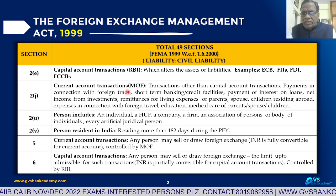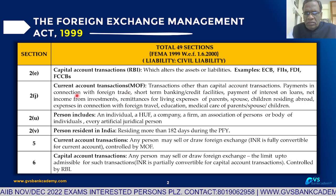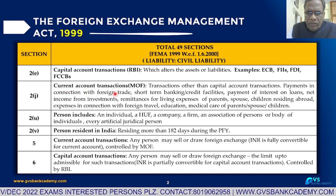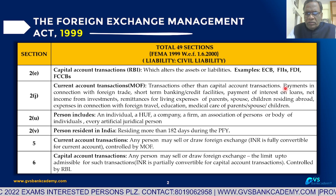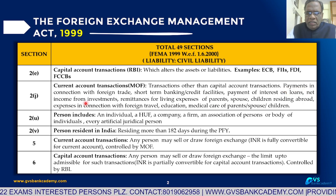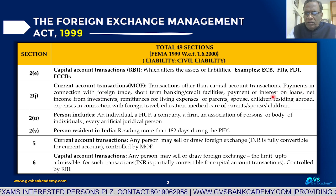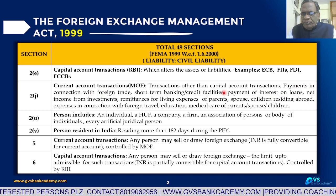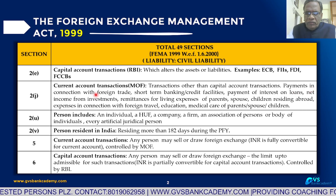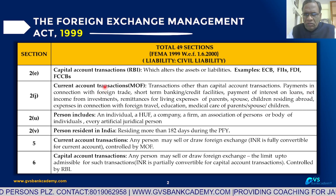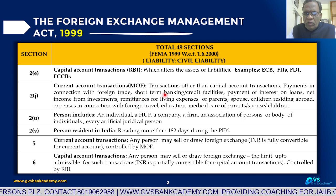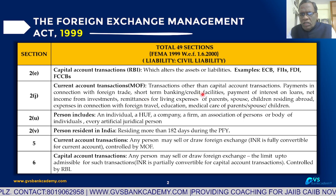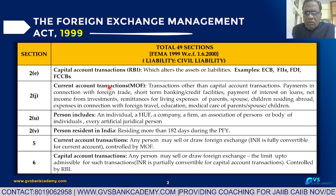Any transaction other than Capital Account Transactions is called a Current Account Transaction. Examples of Current Account Transactions: payments in connection with foreign trade, meaning exports and imports. Short-term borrowings and short-term banking or credit facilities also come under Current Account Transactions.